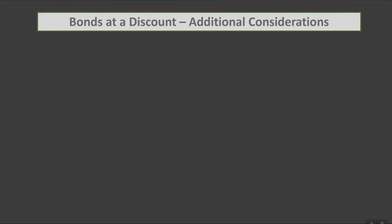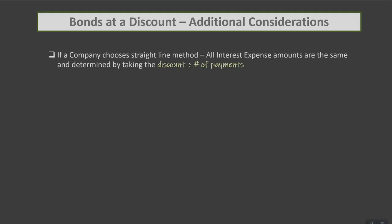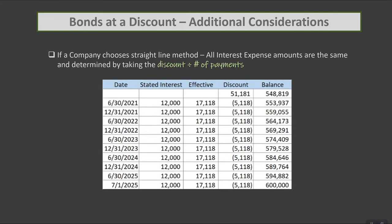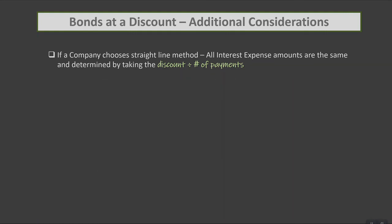A few additional points relevant to all bonds: if a company chooses the straight-line method, that means instead of having different interest expense amounts every payment based on the balance, you take the entire discount or premium divided by the number of payments, giving the same effective interest rate all the way down. You have the same journal entry and your plug doesn't change period over period, but you still get down to zero. It's a simplistic method, but you must make sure it does not have any material impact on the financials if you're going to use it.